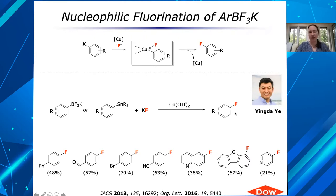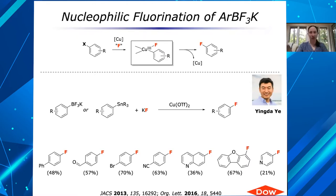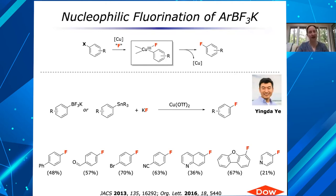That's an interesting question. The challenge I think is that the Lewis acid probably wouldn't be compatible with the fluoride salts. You'd probably have to add the Lewis acid first, bind it to the pyridine, and then add the fluoride source — but there might still be an equilibrium where the fluoride would complex with the Lewis acid. We haven't tried that. It's an interesting idea, but if there's an equilibrium there, you might run into problems with competition between the pyridine and the fluoride.